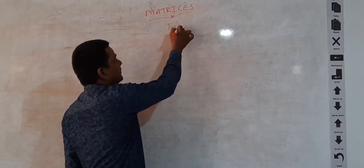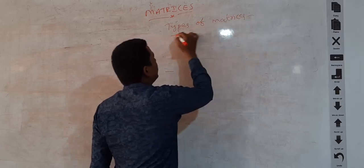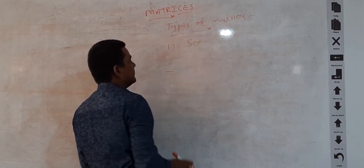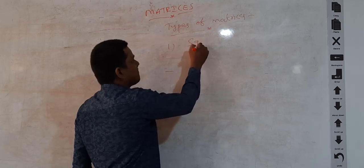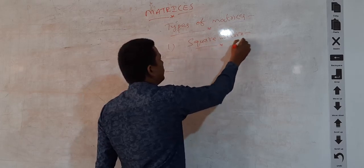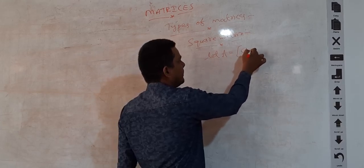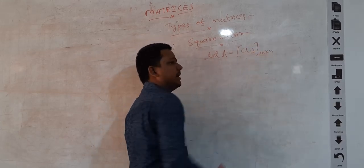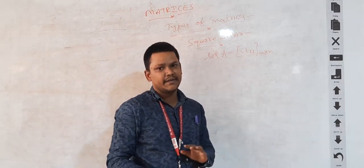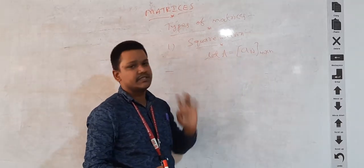The first type of matrix is the square matrix. Let capital A be a matrix with elements of the form A-i-j of order m by n. A matrix is said to be a square matrix when the number of rows is equal to the number of columns. We can call that matrix a square matrix.